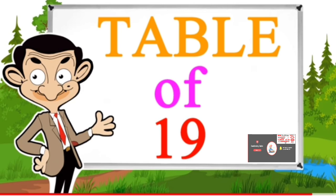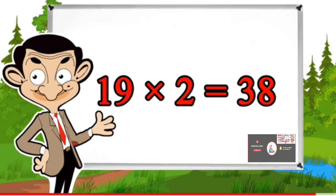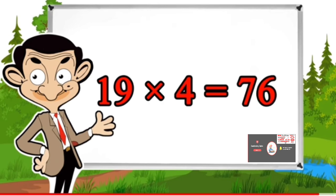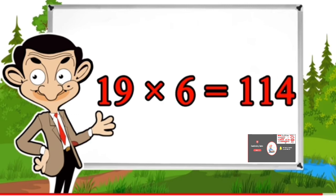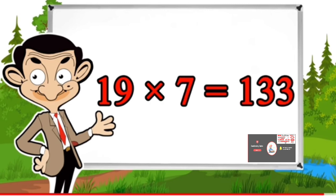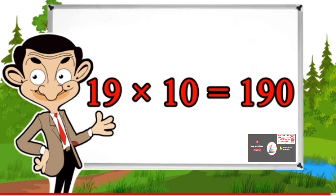Table of 19: 19×1=19, 19×2=38, 19×3=57, 19×4=76, 19×5=95, 19×6=114, 19×7=133, 19×8=152, 19×9=171, 19×10=190.